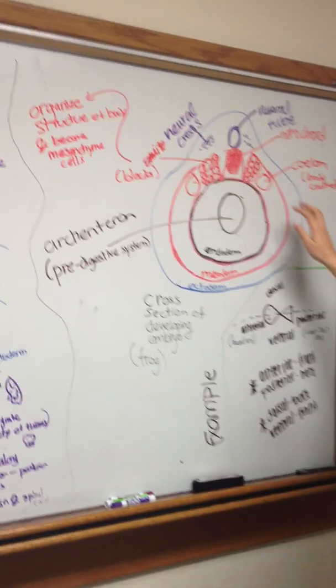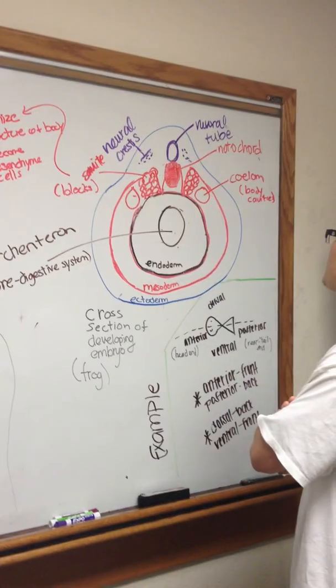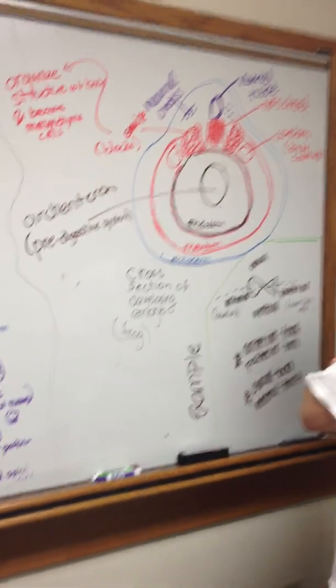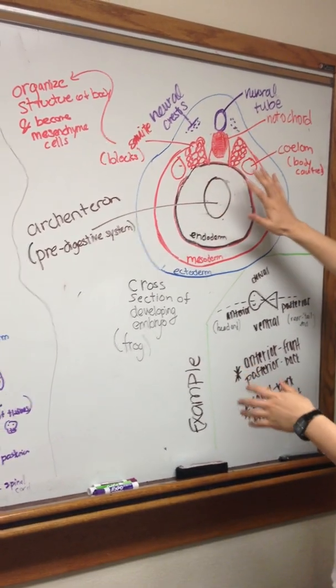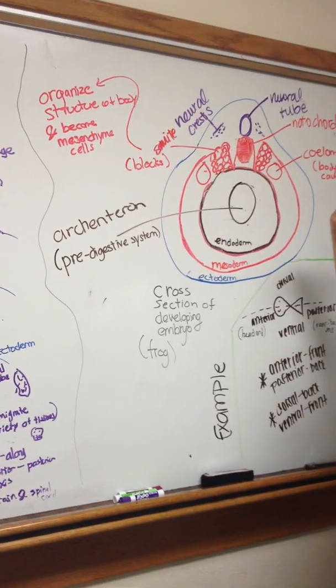At the same time, we'll have developing structures of coeloms, which are considered body cavities. This in its entirety represents a cross-section of a developing embryo, in this case, a frog.